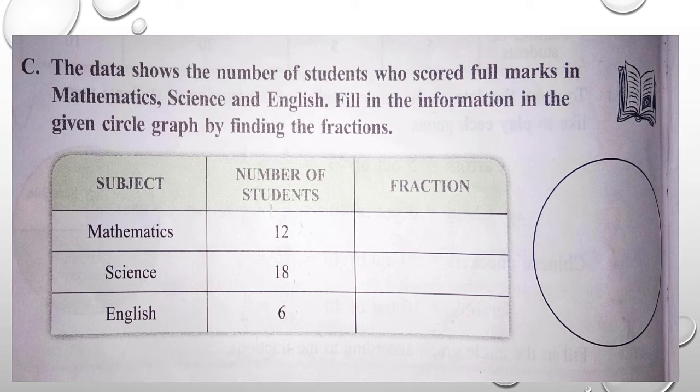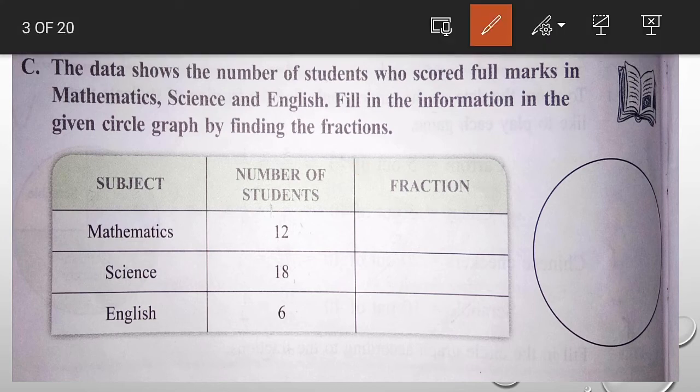The fractions we need to find. The circle is empty, so first we need to find total students. Total students: 12 plus 18 is 30, 30 plus 6 is 36. The total number of students is 36.